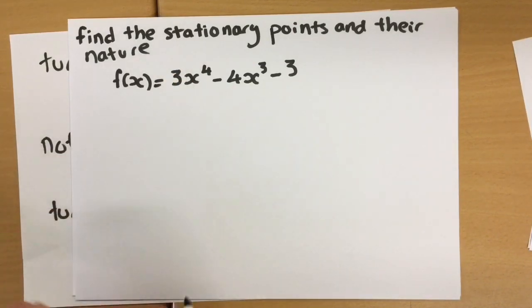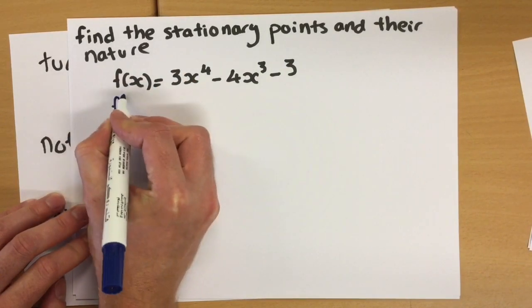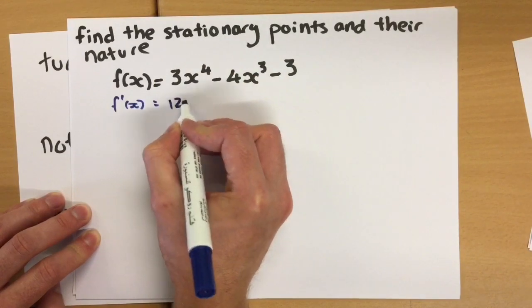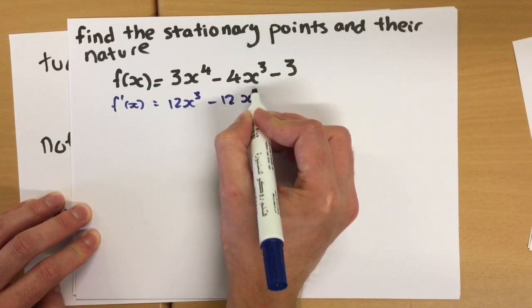Well, obviously, to find a stationary point, we need the gradient to be zero. So what we're going to do is find the first derivative of this equation, 12x cubed minus 12x squared.